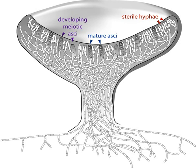The morel (Morchella), an edible Ascocarp — not a mushroom — favored by gourmets, is a mass of apothecia fused together in a single large structure or cap. The genera Helvella and Gyromitra are similar.